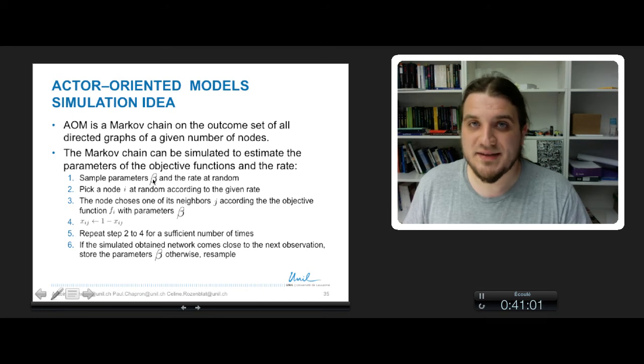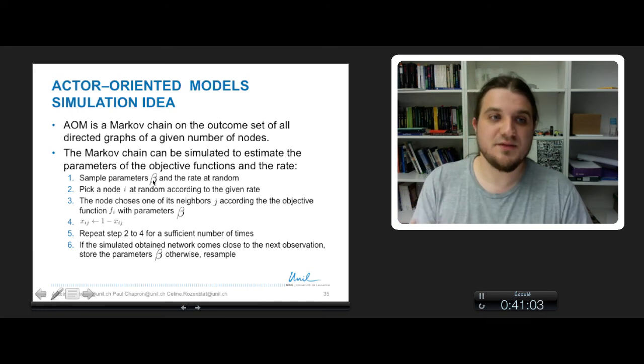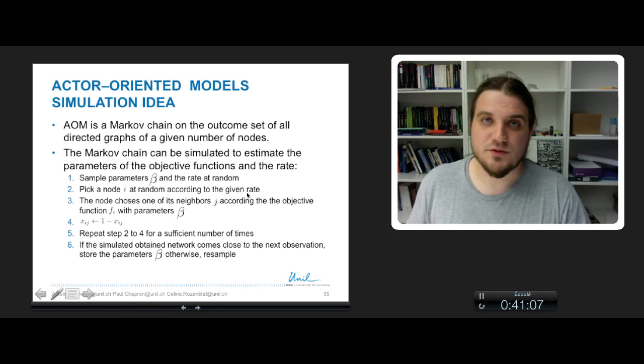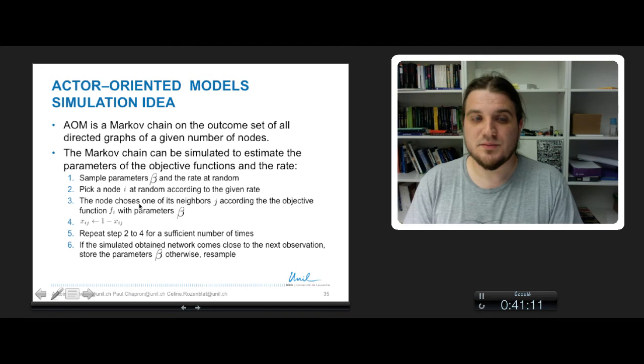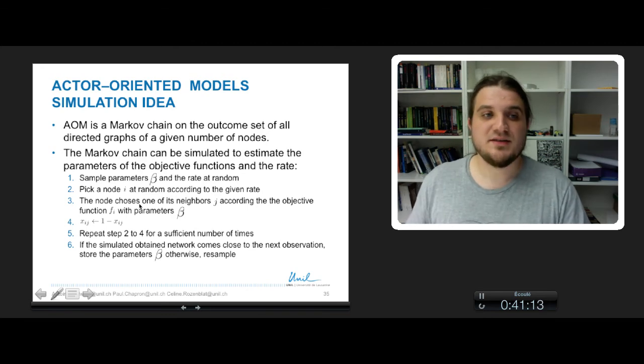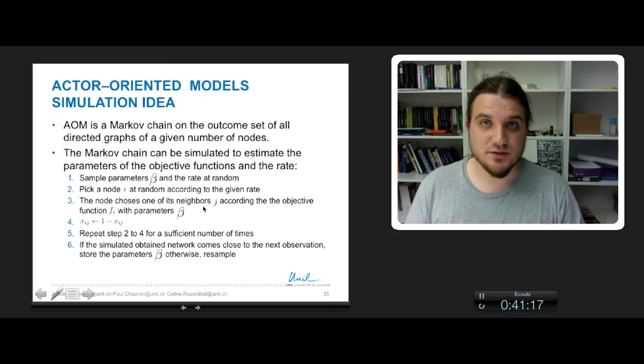So you sample the weights of your objective function, you pick a node at random according to the given rate of the rate function. This node I choose its neighbor J according to the result of the objective function with parameter beta.